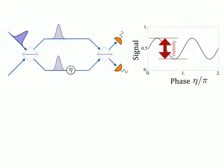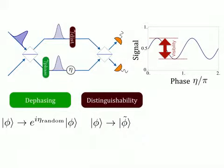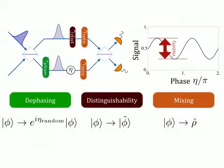The most important decoherence effects are dephasing, i.e., loss of phase coherence, distinguishability, i.e., mode mismatch between the two arms and, finally, mixing, which can be due to residual entanglement to idler photons or some random classical process.